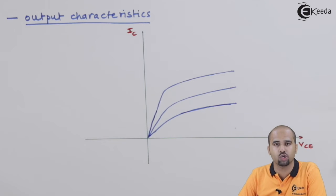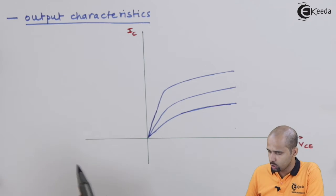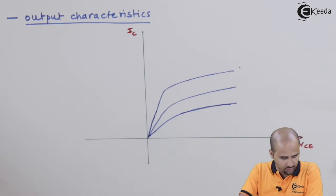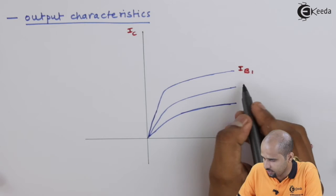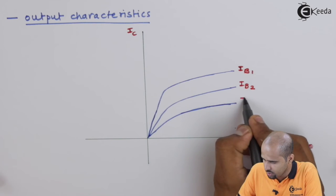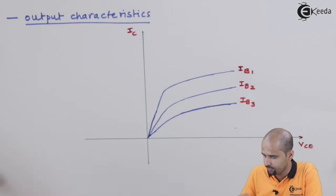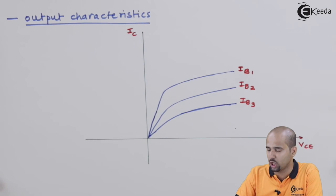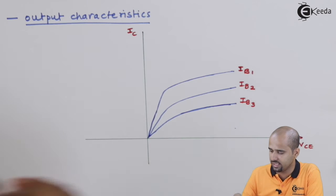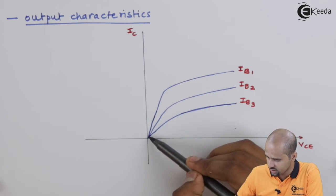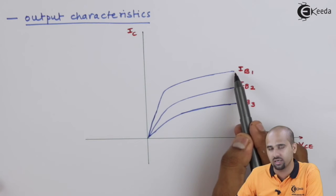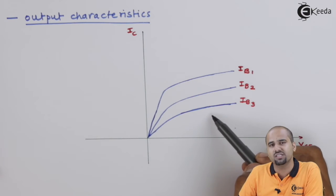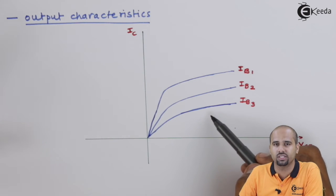The output characteristics of BJT are plotted for different values of base current Ib. If we keep the value of Ib constant — say Ib1 — then we get one specific curve. Getting all three curves simultaneously is nearly impossible during normal operation; the output characteristics of BJT are observed one curve at a time for each fixed Ib.